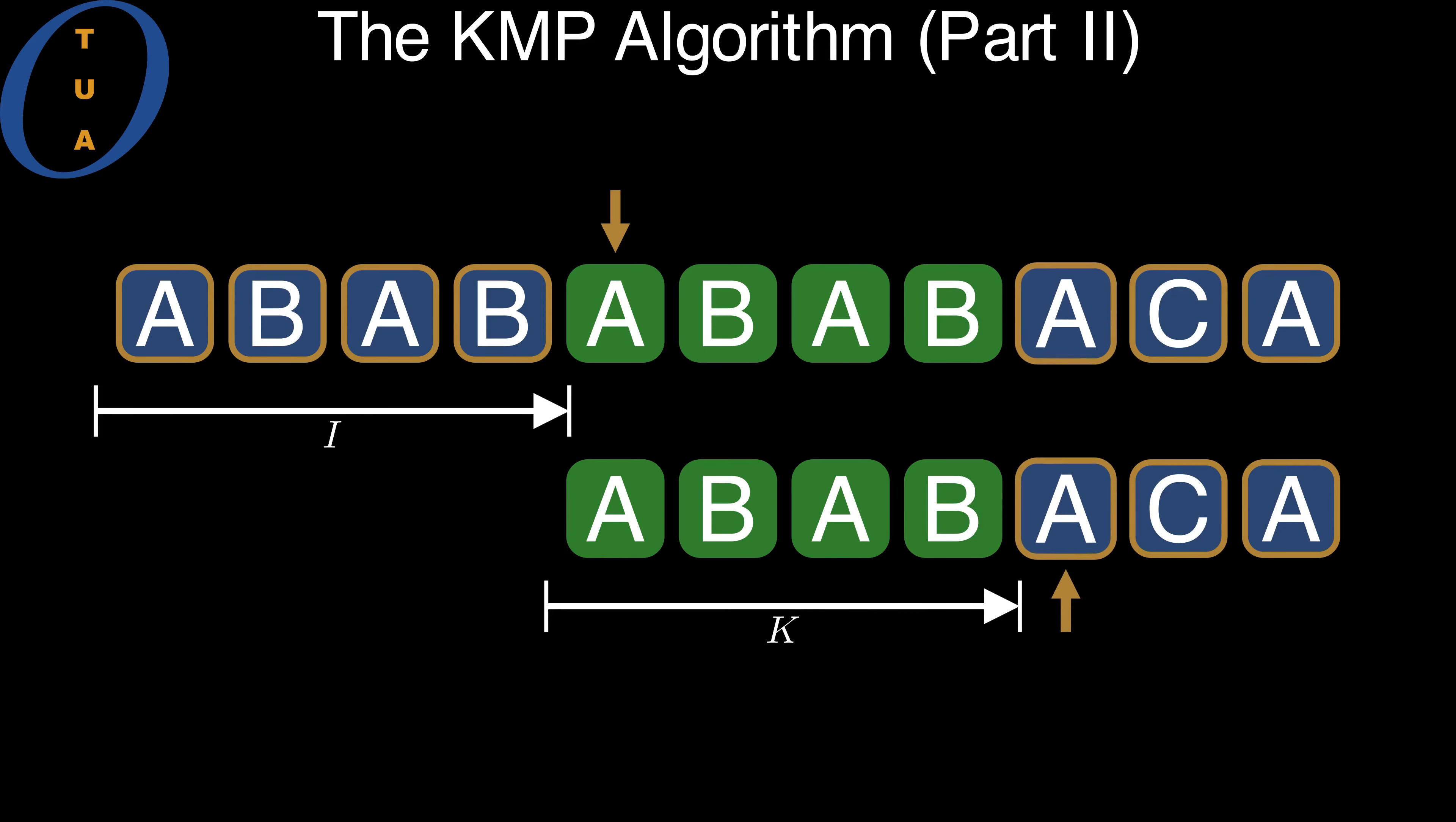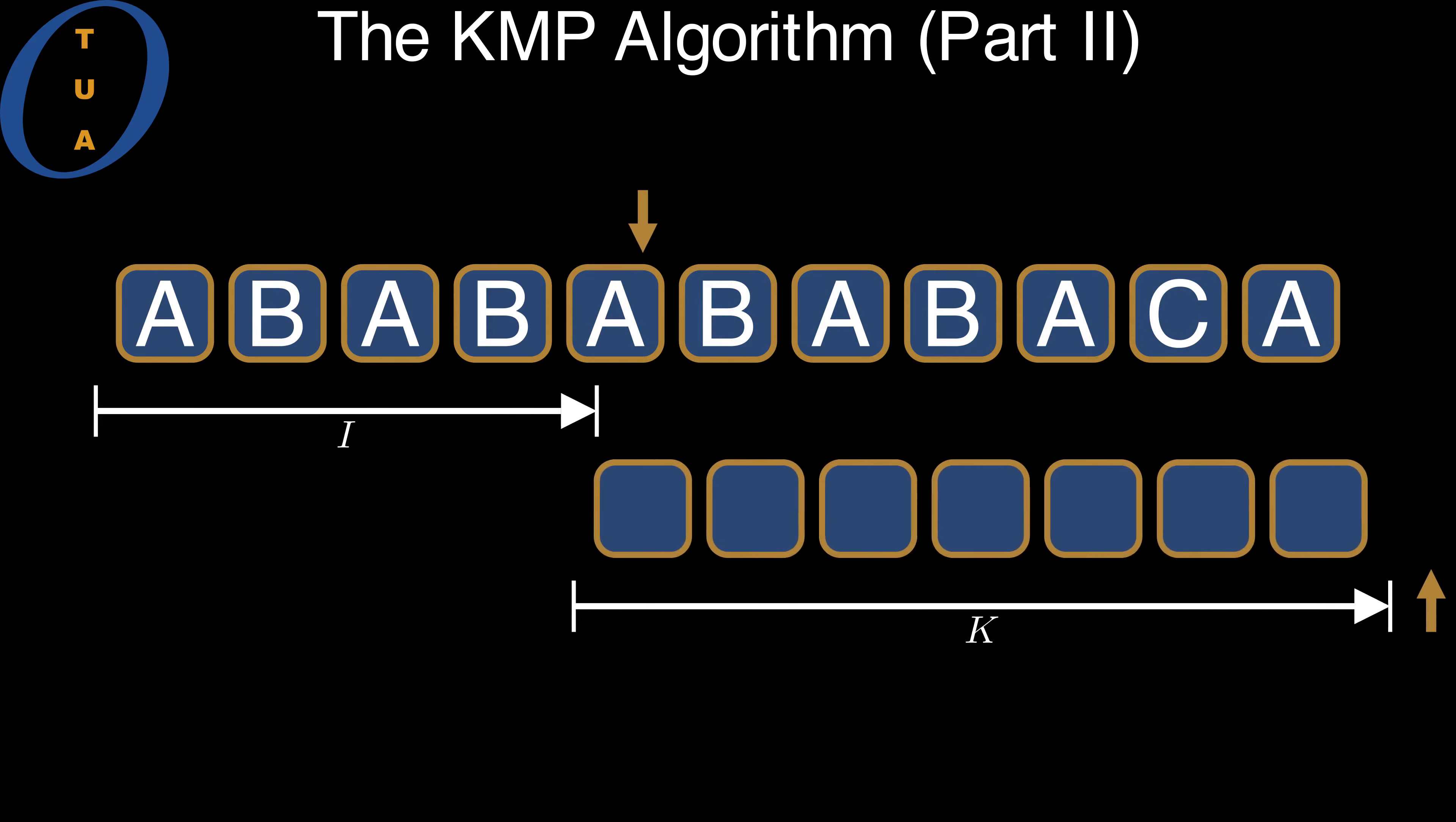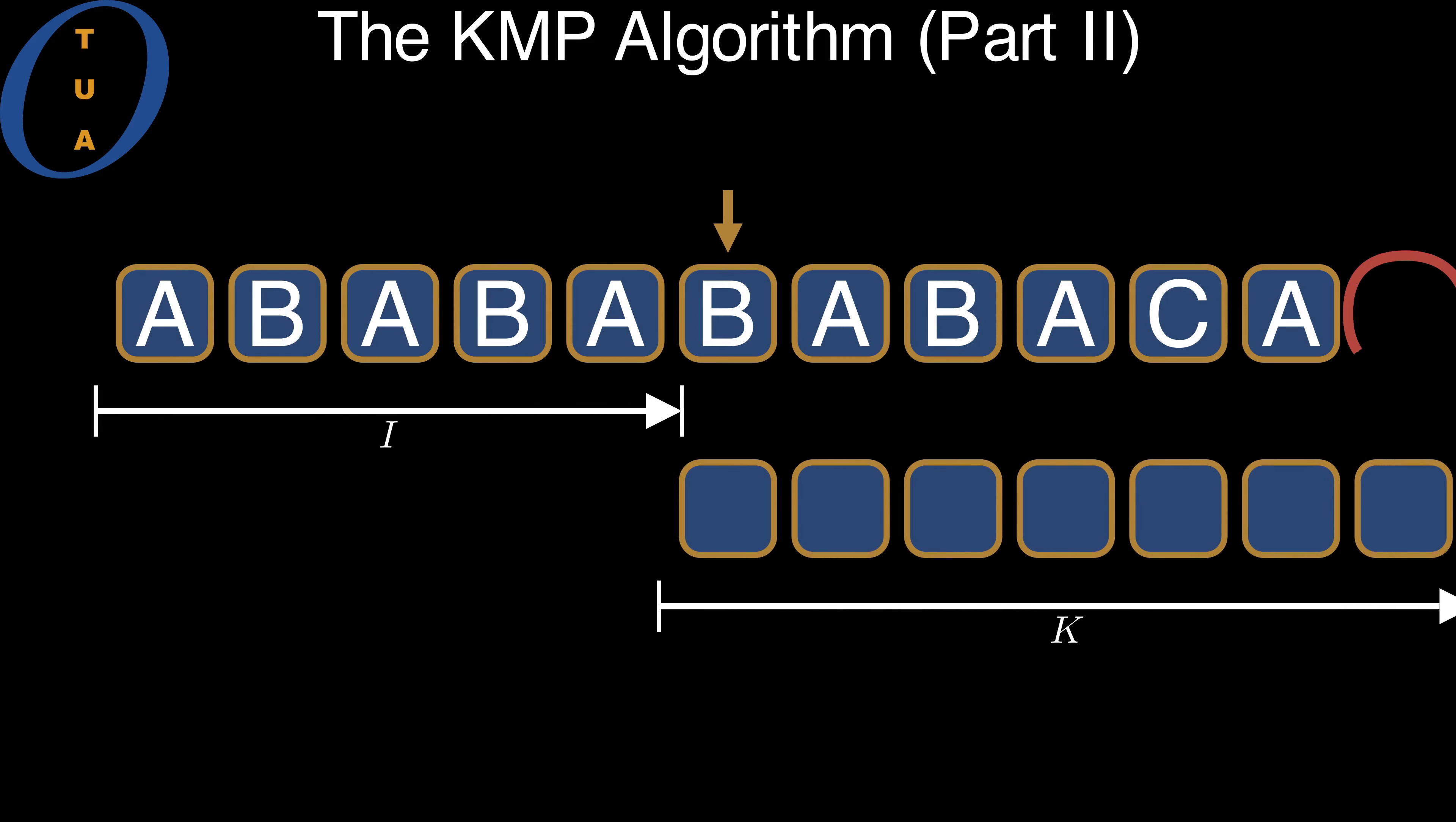We repeat these actions until either K reaches M, in which case we have a match, or until I is too big to be a valid offset into the text, in which case there is no match.